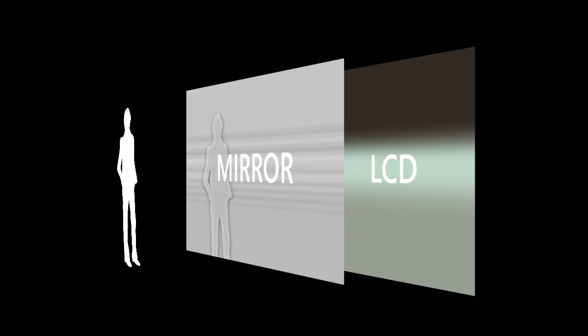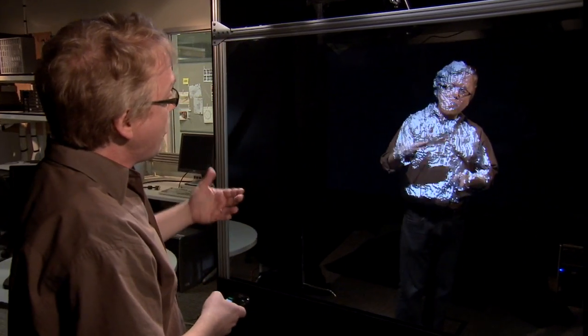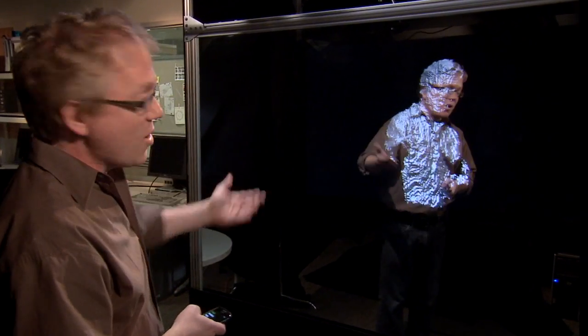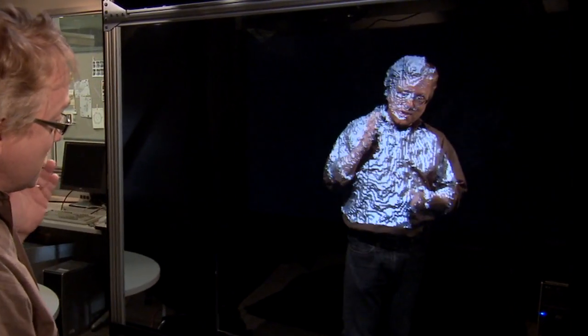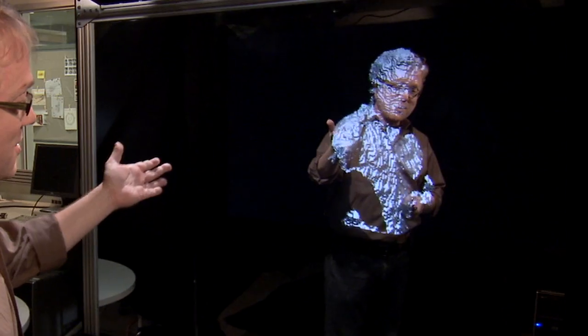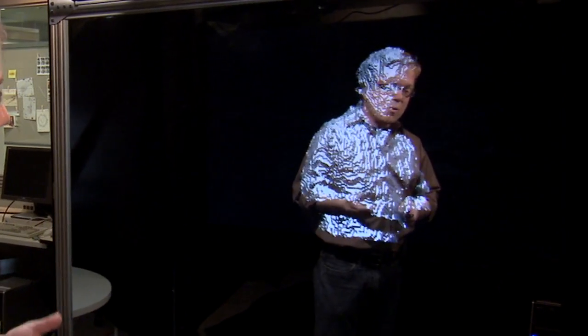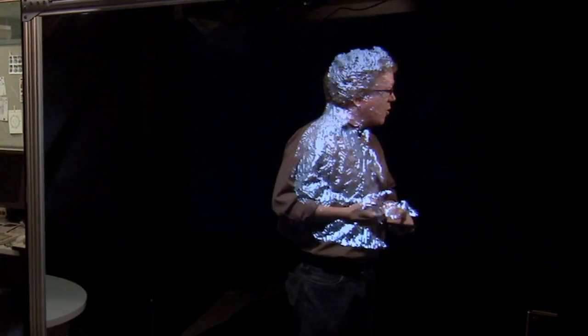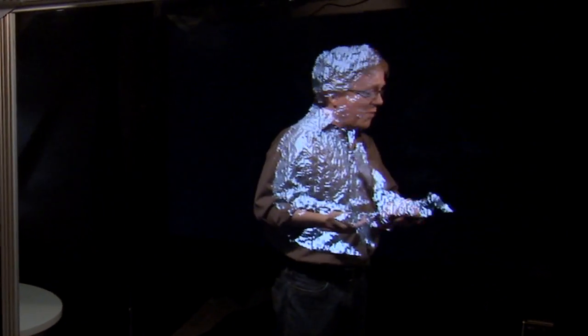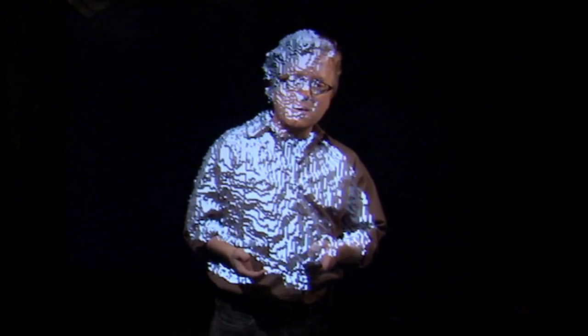I'm standing about three feet away from the translucent mirror. That means if we render graphics on the LCD in life size, I can still see those graphics, and they're basically in correspondence with my reflection. So it looks like the graphics are perfectly overlaid onto my reflection.